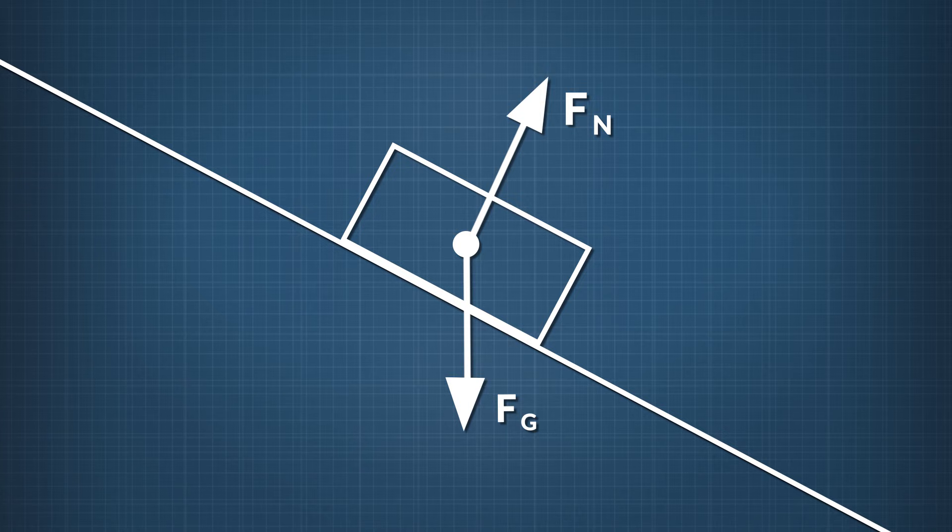What other force is acting on the block while it slides? If you said friction, you're right. The force of friction acts parallel to the ramp surface, and points opposite the motion of the block. It looks like this, and is labeled F sub F.